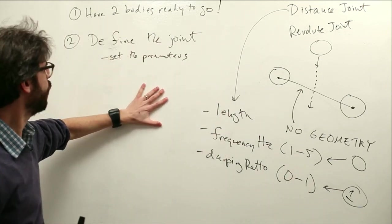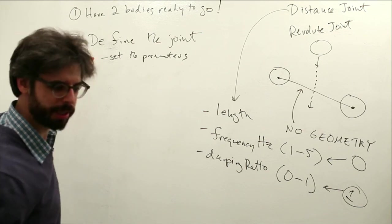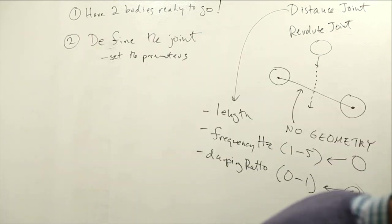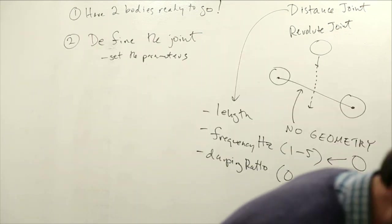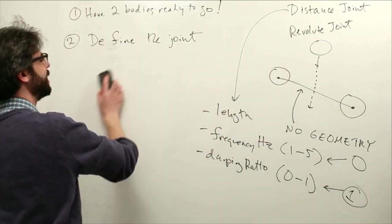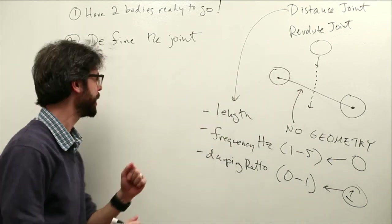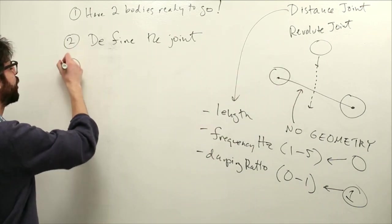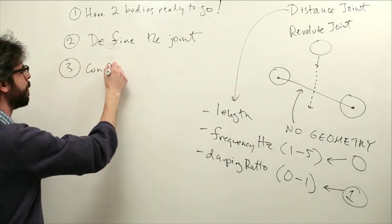Okay, so once we've defined the joint, look at my notes here. I guess I made that, let's make that a separate step. So we have four steps here. Once we've defined the joint, the third step here would be to configure all the parameters.